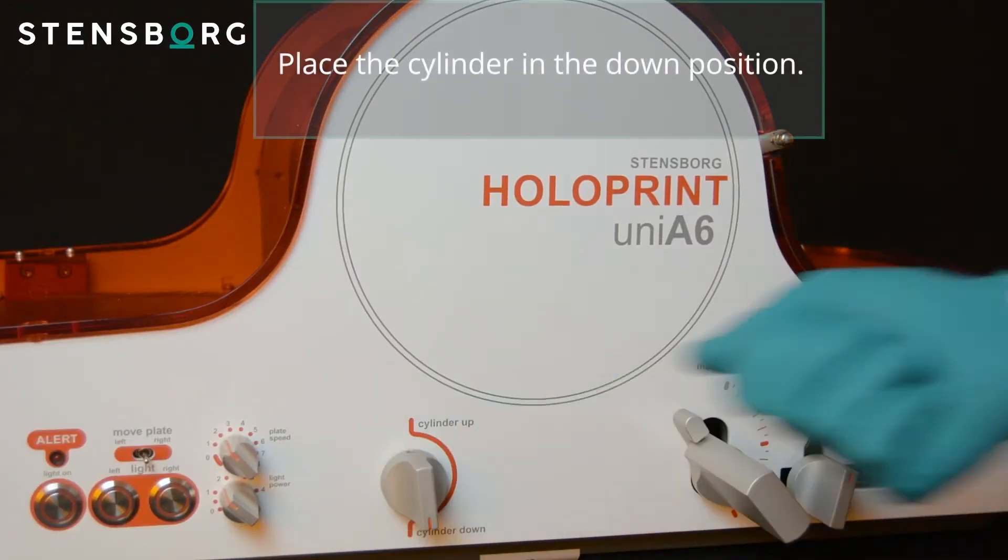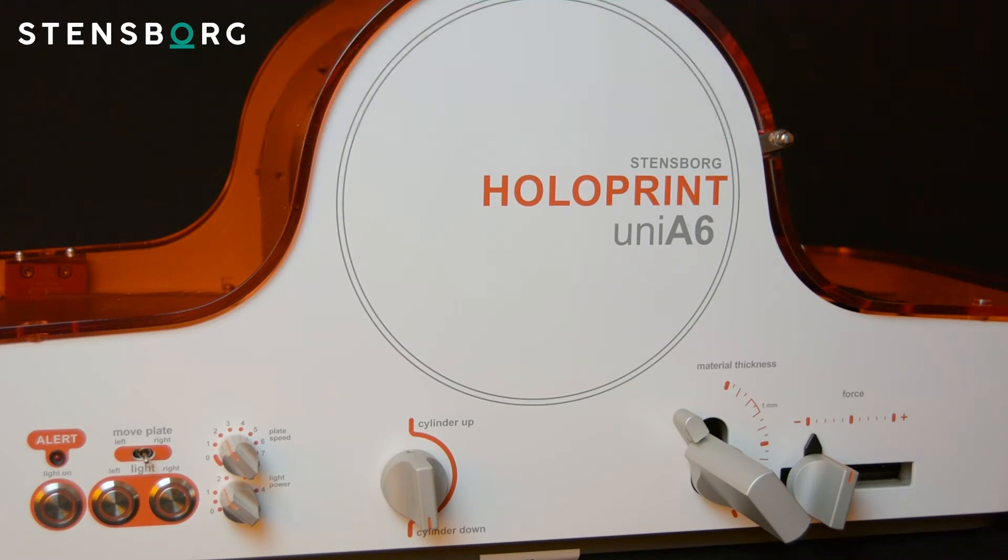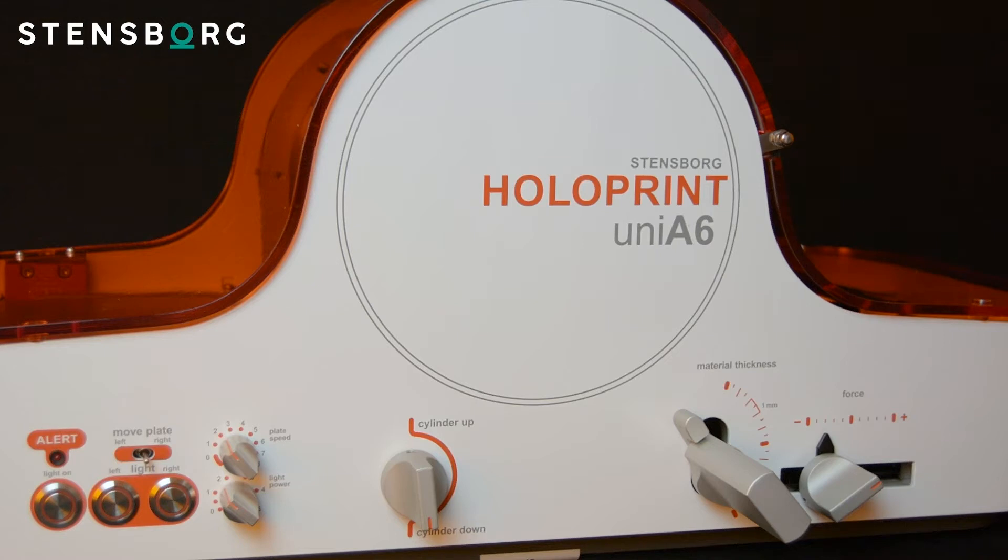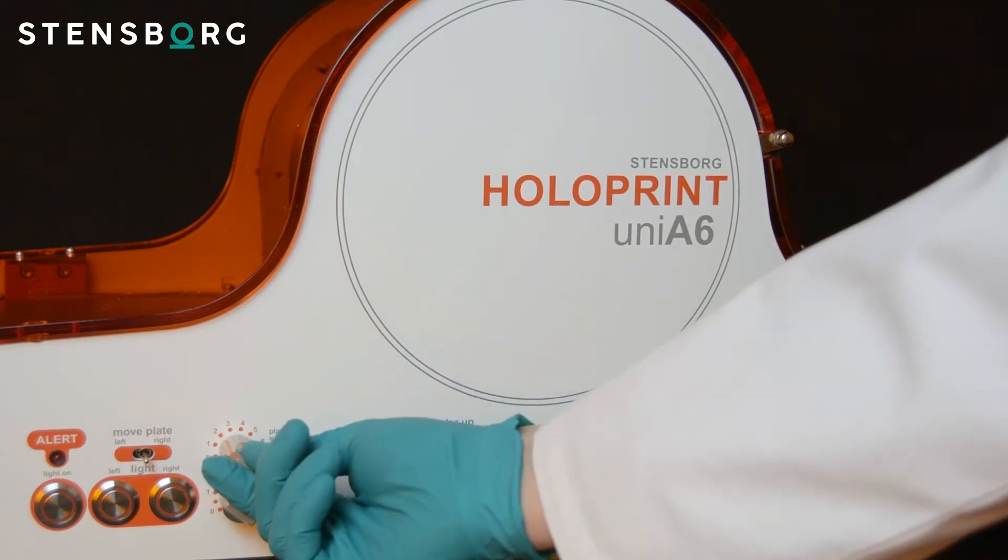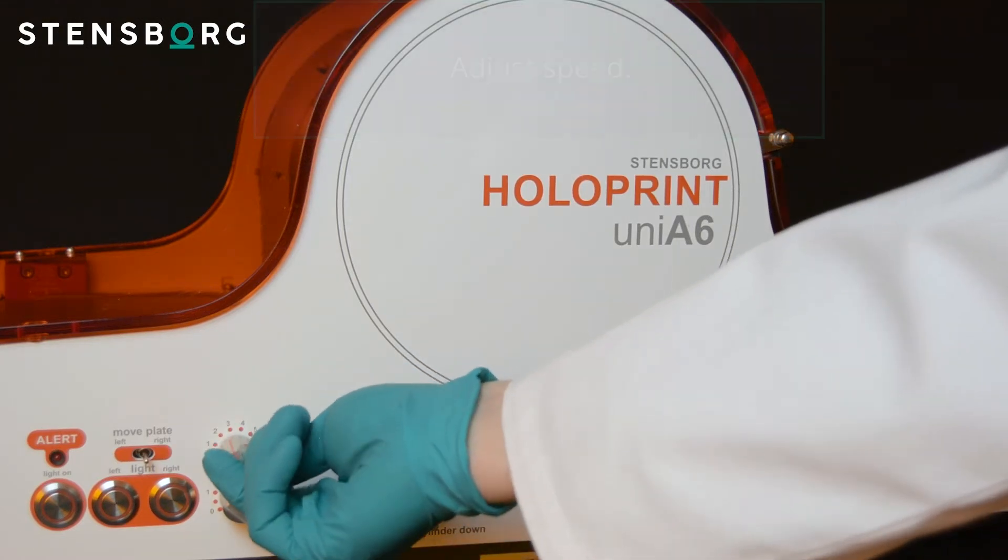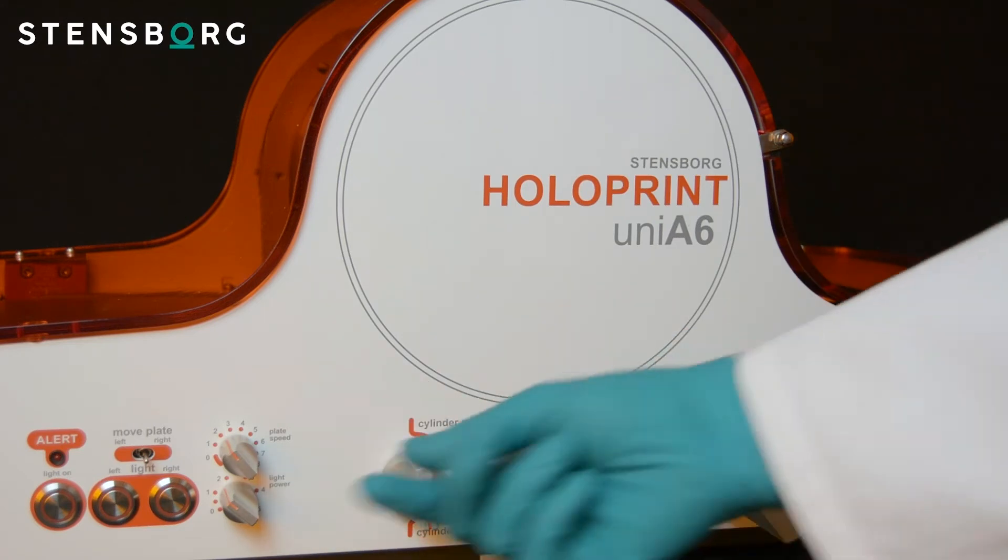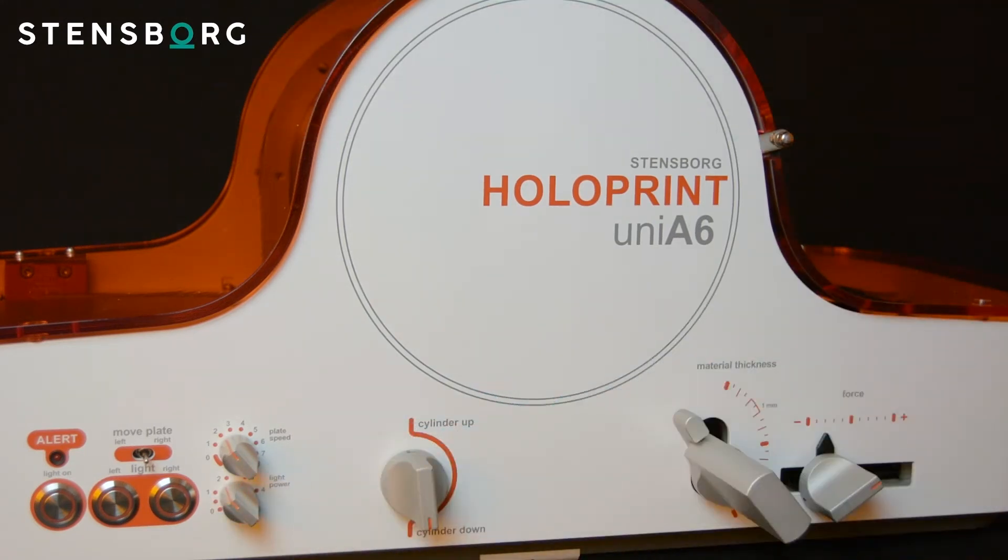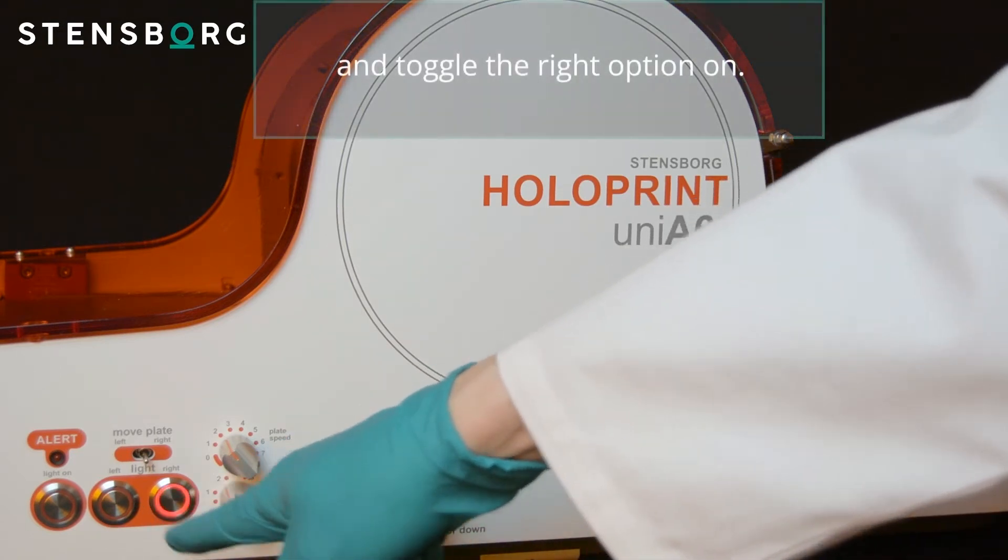Place the cylinder in the down position. Apply force. Adjust speed. Adjust the light power. And toggle the right option on.